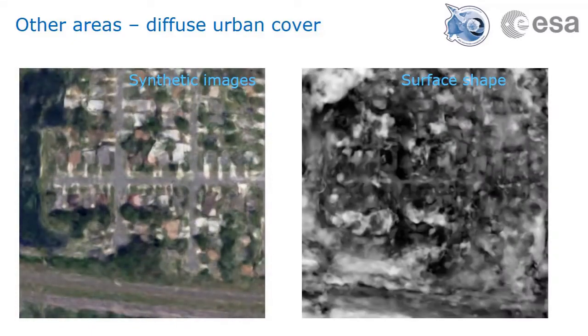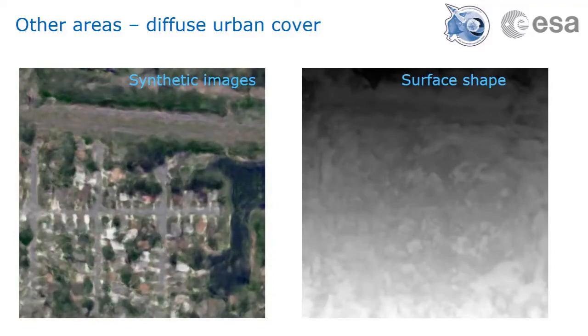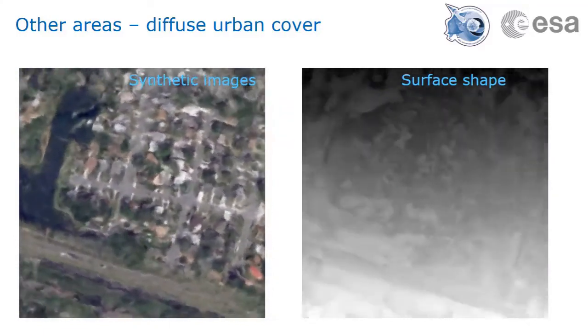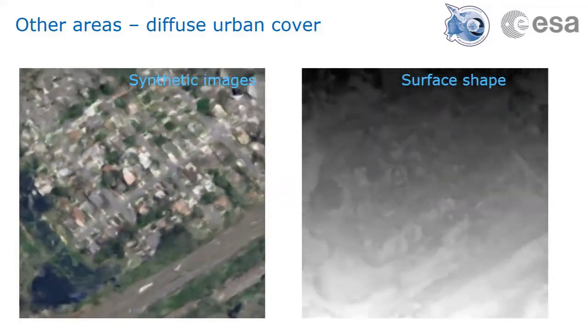Here we show some results on different scenes. This is a diffuse urban cover with very small variations in altitude. The details of the surface shape are not very well estimated, but some of the larger trees in flat areas are visible.